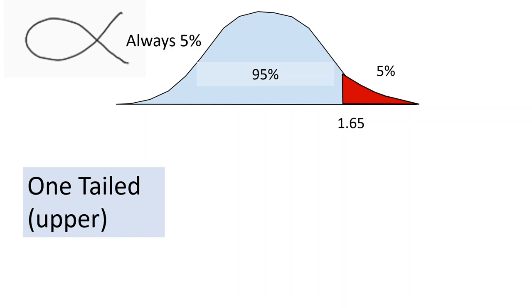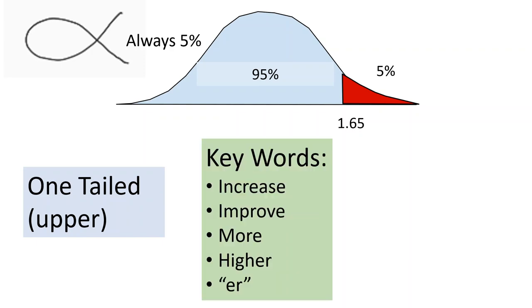So how would we know if we're going to do a one-tailed test? Well, first of all, you're going to need good justification, previous literature, some really valid reasons to do a one-tailed test. But the research question would also indicate to you that a one-tailed test is warranted. So you're going to see words for this like these.